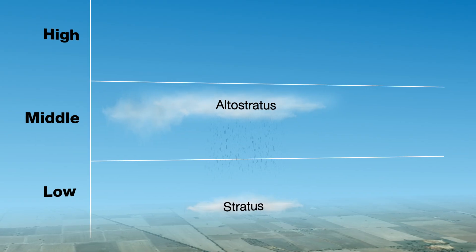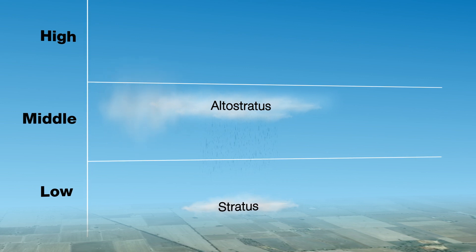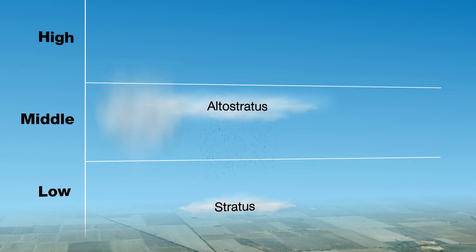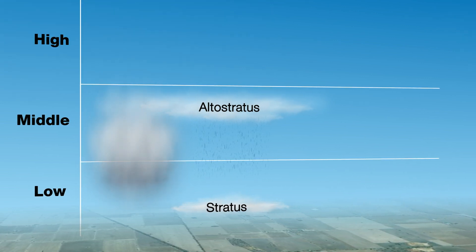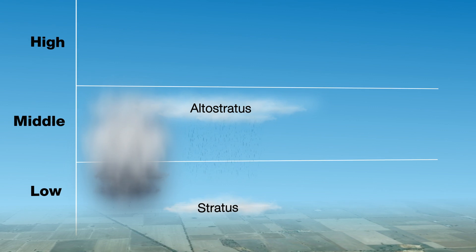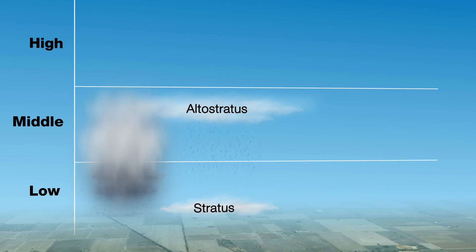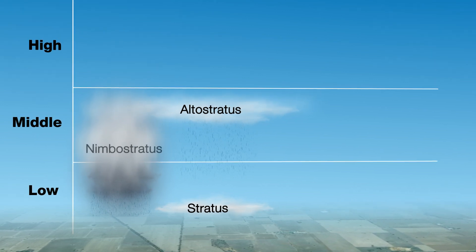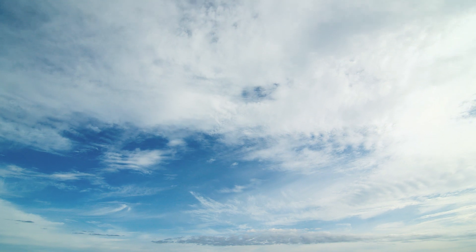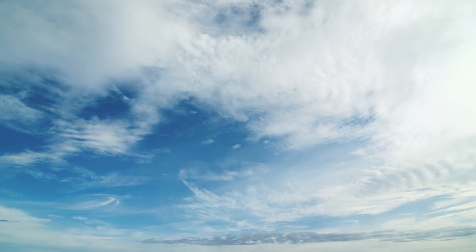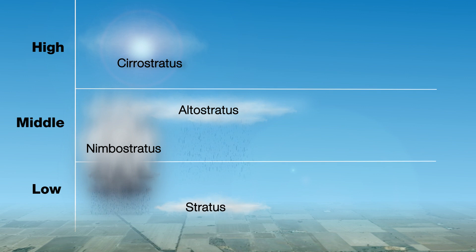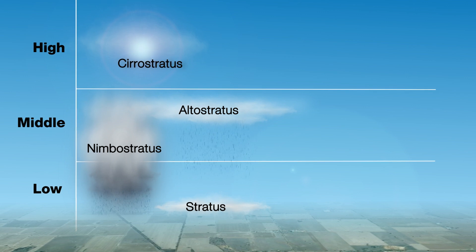This altostratus can undergo further vertical development. This can hold more moisture within the cloud, appear darker, the cloud base lowers, and produce heavier rainfall. This is what we call nimbostratus. And for the very high cloud that's really white and wispy, it's made of ice crystals — we call this cirrostratus. We also get a lot of halo activity, where the ice crystals are refracting light around the moon and the sun.